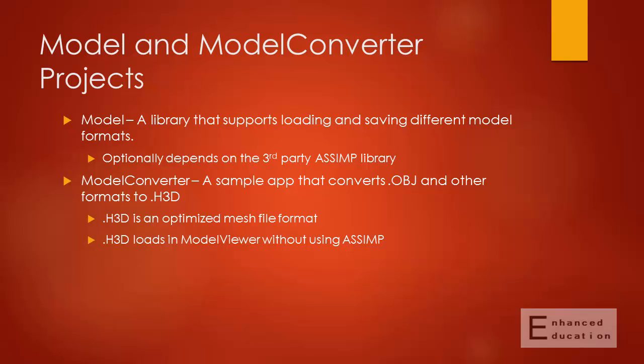By popular demand, we provided the code that we used to convert the Sponza scene from .obj to .h3d. OBJ is not a good real-time format, so we process and optimize it for H3D. We didn't initially release this code because it depends on a third-party library called ASSIMP, which is the Open Asset Import Library. It uses a different open-source license, so instead we provide instructions about where to find it and how to include it in your build.